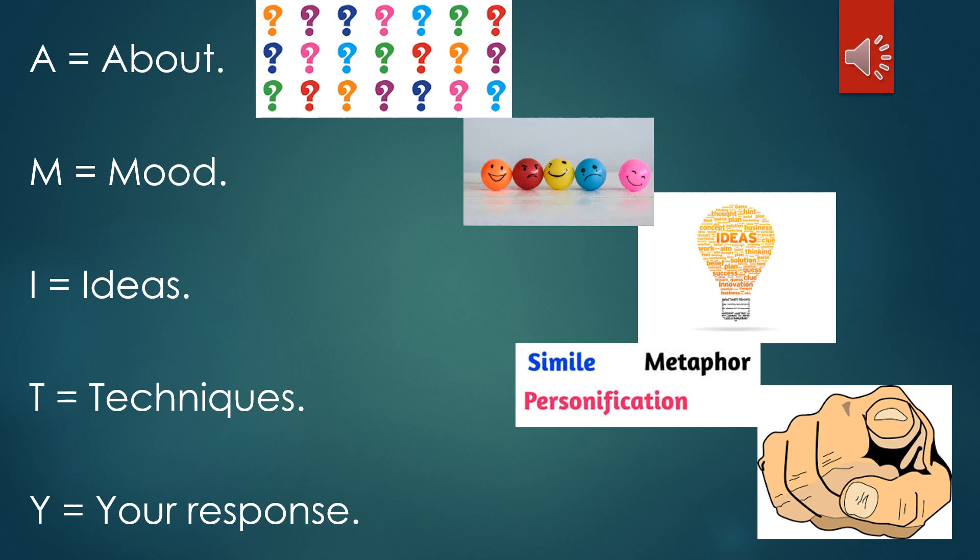The M in AMITY stands for the mood of the poem. When we mean mood, we mean does it make the reader feel happy or sad? Does it make you question? Does it feel a bit tense? Also, as you read through the poem, does the mood develop and change?